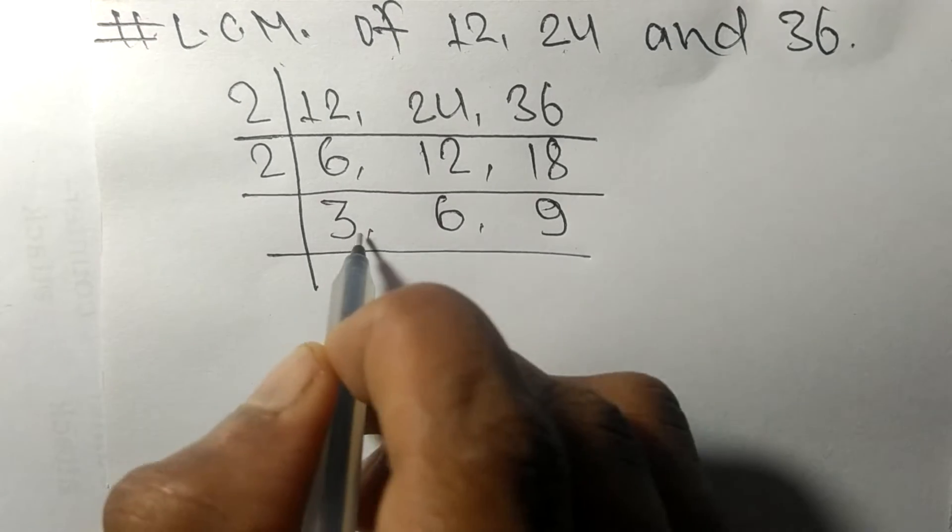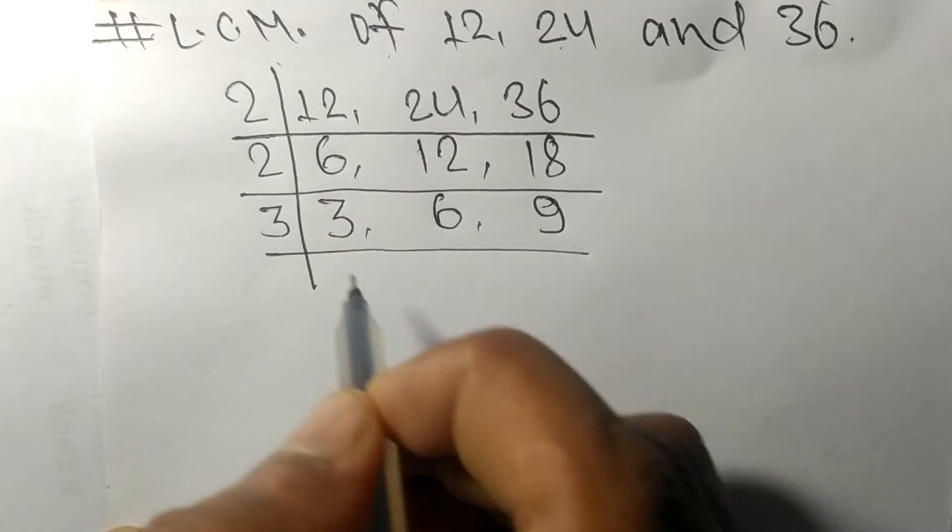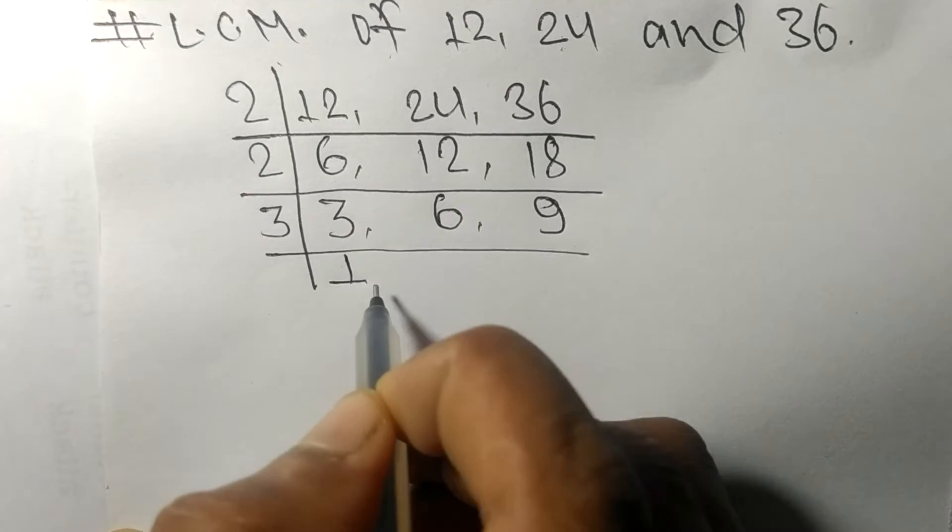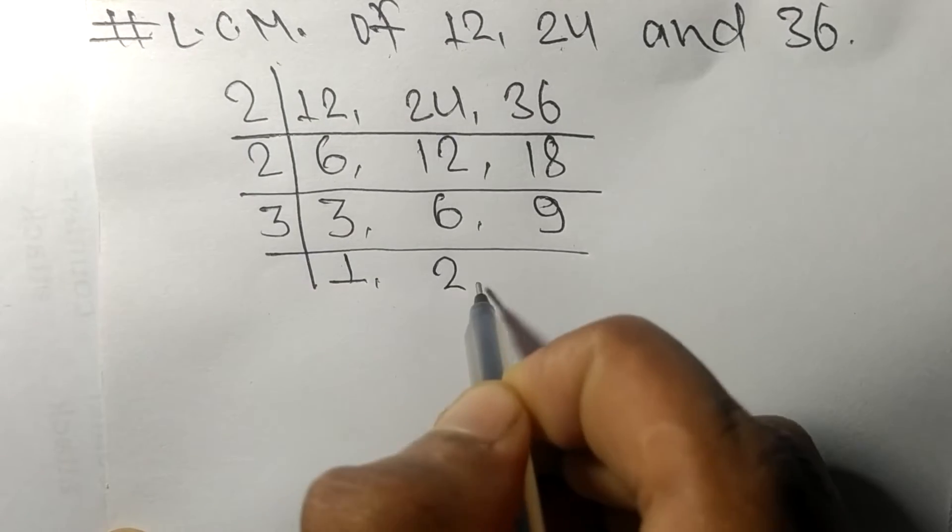So now these all numbers are divisible by 3. 3 times 1 means 3, 3 times 2 means 6, 3 times 3 means 9.